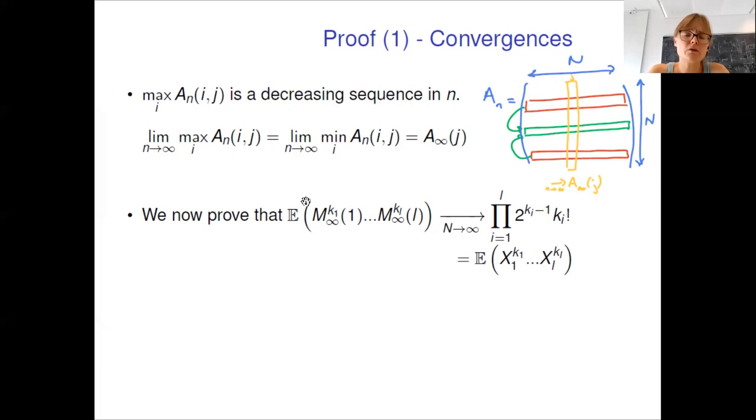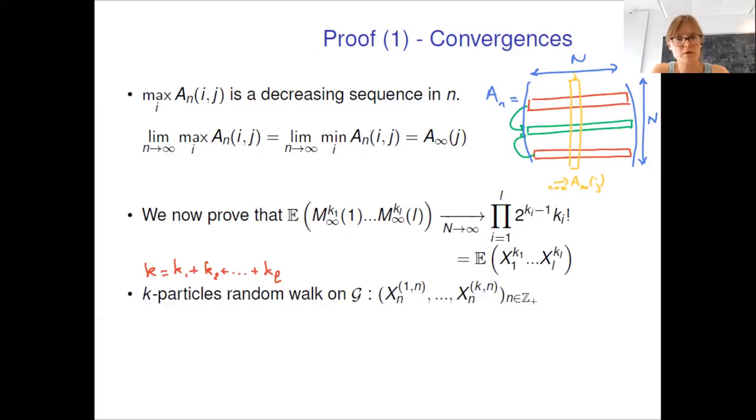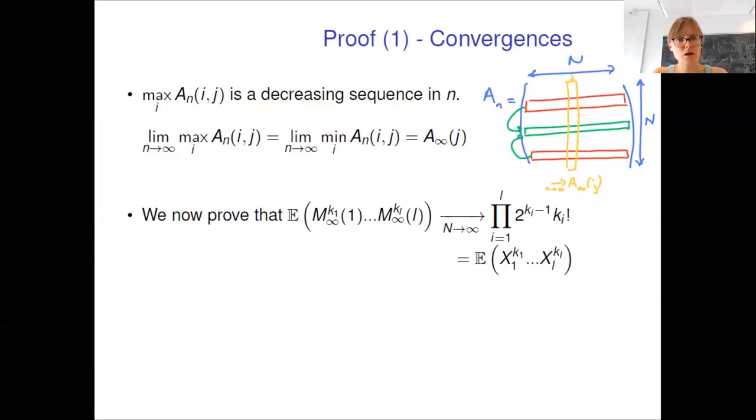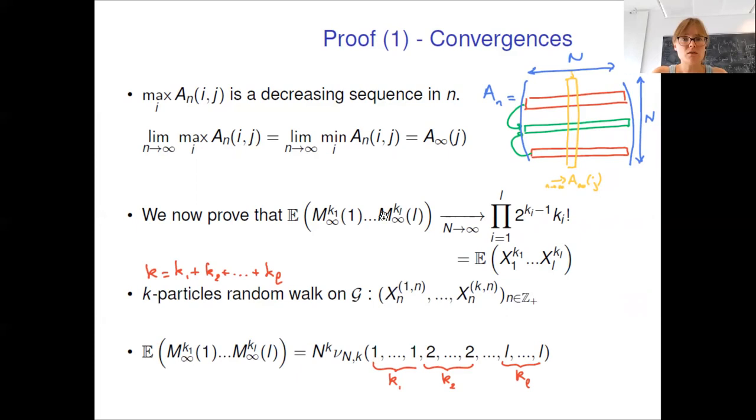For the second point, we will prove that the moments of the L first ancestors converge when N goes to infinity towards the moment of L independent random variables that are equal either to zero with probability one half or follow exponential law with parameter one half. To this end, we consider a K-particles random walk where K equals K1 plus K2 and so on. This random walk is a Markov chain that is irreducible and aperiodic and it converges in law toward a stationary distribution that I denote mu and K. The link between these moments and mu and K is that these moments are equal to N to the power K times mu and K of 1, 1, 1, 2, 2, 2 and so on. We now study these quantities.